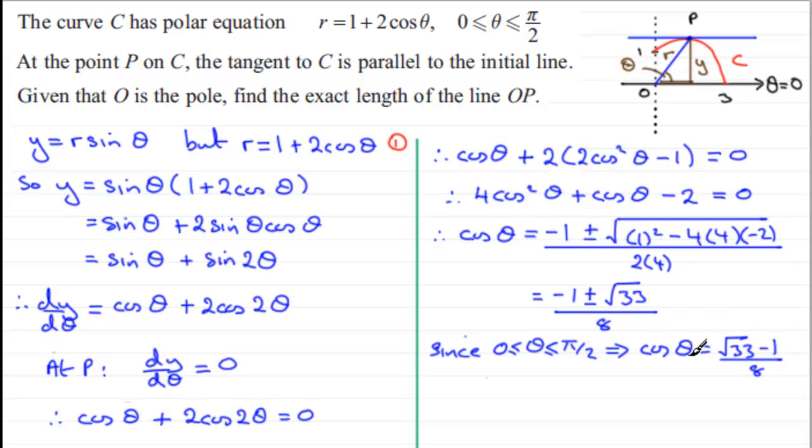Now, all I need to do now is just substitute the value of cos theta back into equation 1. It will give me r and that will represent the length OP. So if we just say sub in 1, then what we have got is that OP now equals 1 plus 2 times cos theta. So plus 2 times root 33 minus 1 divided by 8. And if we simplify this, it comes out at 1 quarter multiplied by 3 plus root 33.